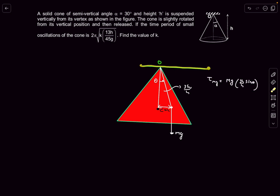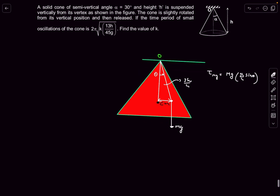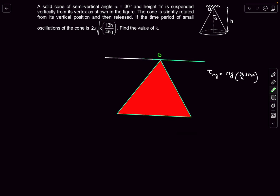To solve this problem we need the moment of inertia of the cone about the horizontal axis through the apex O. The axis of rotation is into the plane. About the cone's own symmetry axis, the moment of inertia of a solid cone is (3/10)mR², but we need the moment about a horizontal axis through O. Due to symmetry, the moment of inertia is the same about any horizontal axis through O.